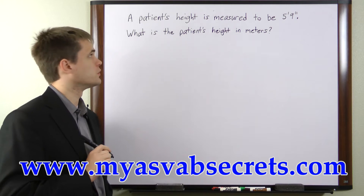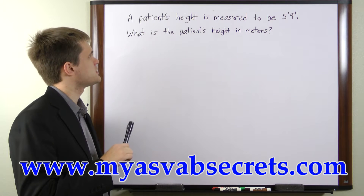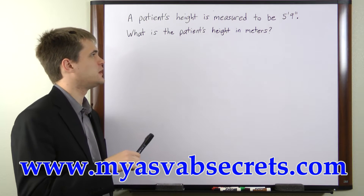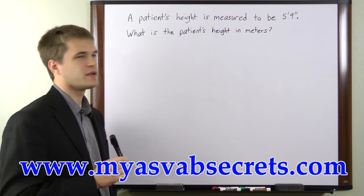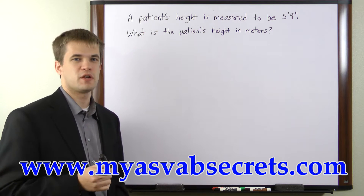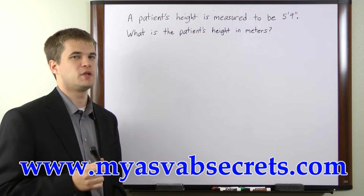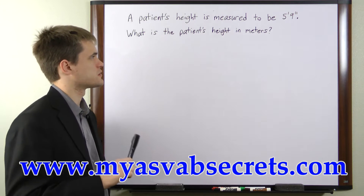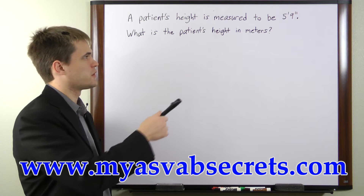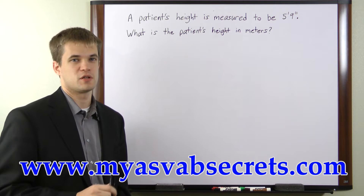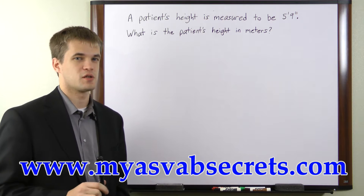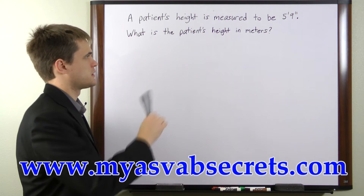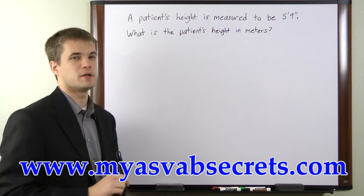In this question we're told that a patient's height is measured to be 5 feet 9 inches and we're asked to find the patient's height in meters. Before we convert to meters we want to convert our feet plus inches into just inches so that we can then convert into metric and get the desired units.